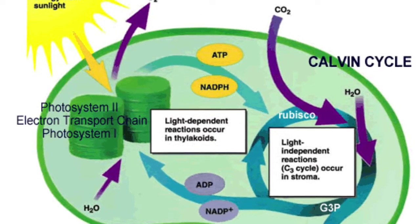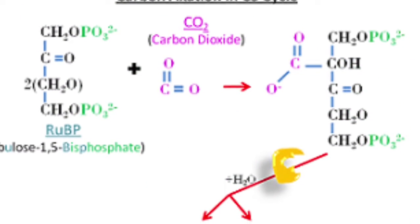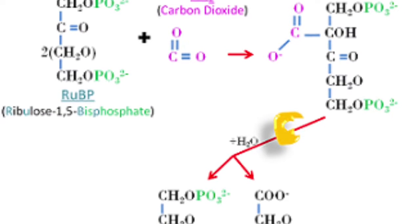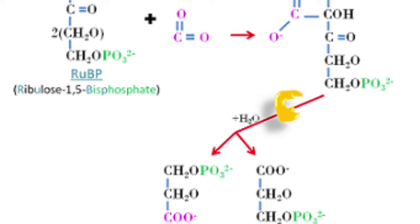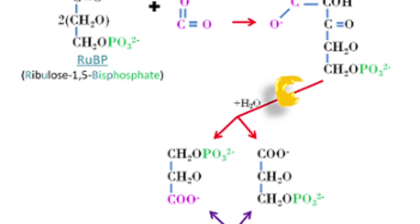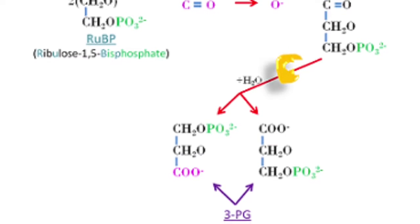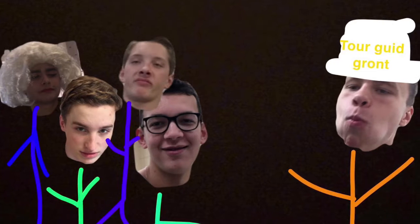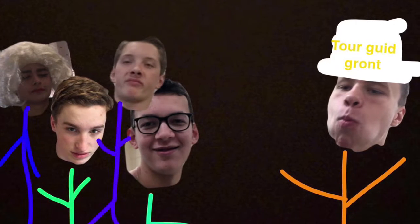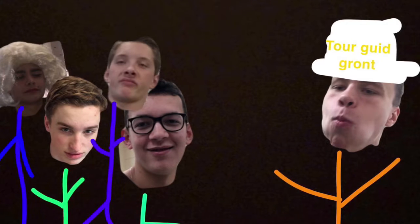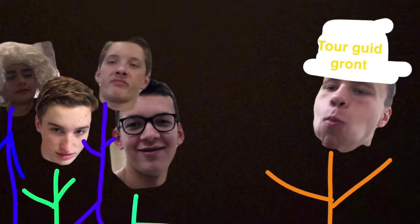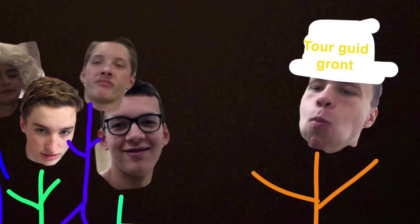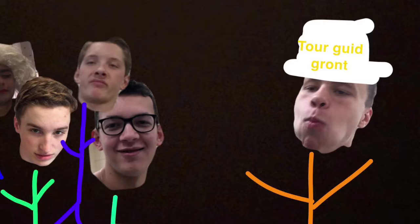What happens first in this cycle is carbon fixation. This is when a CO2 molecule combines with a 5-carbon acceptor molecule, ribulose-1,5-bisphosphate, which is RuBP. This step makes a 6-carbon compound that splits into two molecules of a 3-carbon compound, 3-phosphoglyceric acid. This reaction is catalyzed by the enzyme RuBisCO.